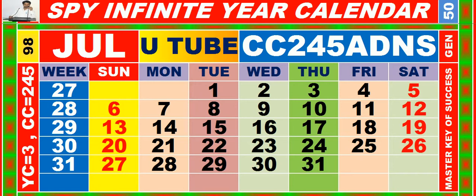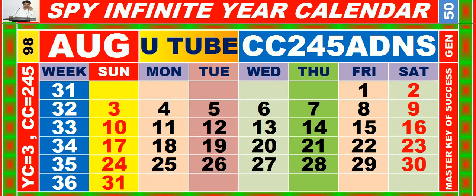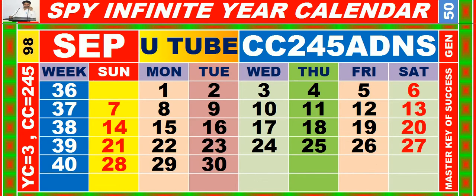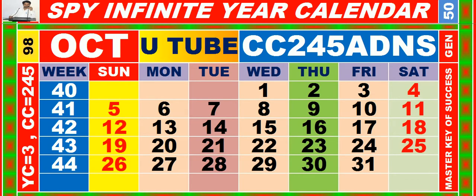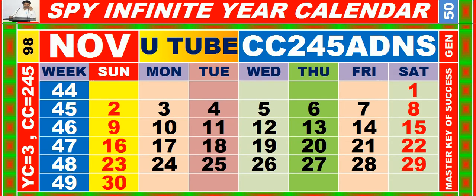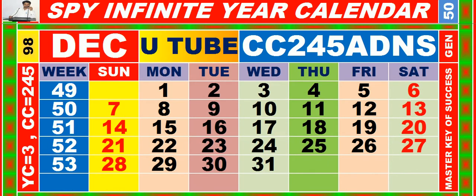Calendar for the month of July, having calendar code equal to 245. Calendar for the month of August, having calendar code equal to 245. Calendar for the month of September, having calendar code equal to 245. Calendar for the month of October, having calendar code equal to 245. Calendar for the month of November, having calendar code equal to 245. Calendar for the month of December, having calendar code equal to 245.